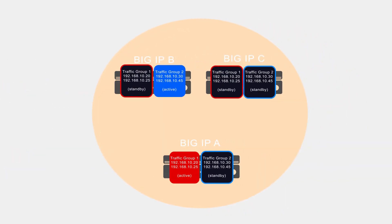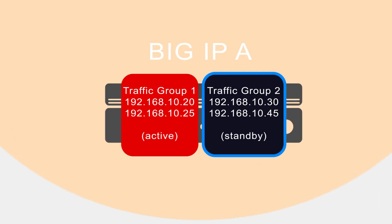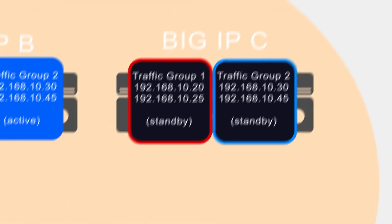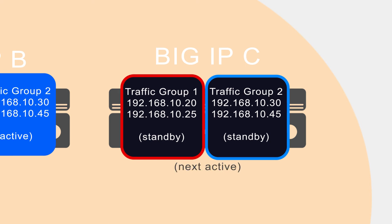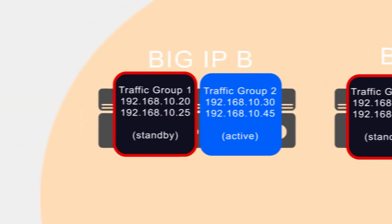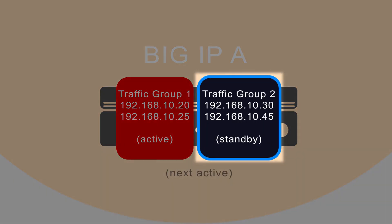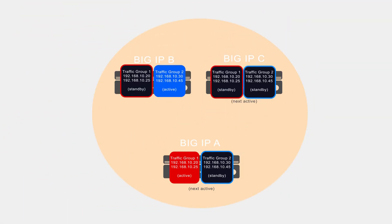The BIG-IP system actually assigns a next active device to each traffic group rather than to an entire device. For example, with two traffic groups, traffic group 1 on BIG-IP-A has BIG-IP-C designated as next active, but for traffic group 2 on BIG-IP-B, BIG-IP-A is next active. Each active traffic flow has a different next active device designated for it, but it's also possible that two traffic groups could have the same device designated as next active.